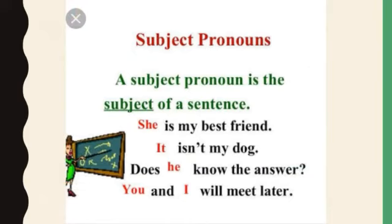Now let us see about subject pronouns and object pronouns. First, subject pronouns. A subject pronoun is the subject of a sentence. For example: she is my best friend — here 'she' is the subject pronoun, referring to female gender. It isn't my job. Does he know the answer? — here 'he' is the subject. You and I will meet later. These are all examples of subject pronouns.